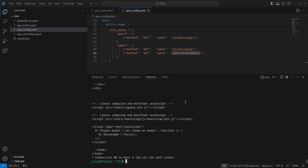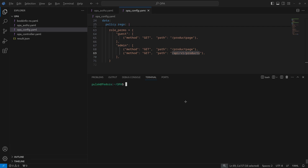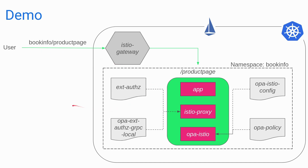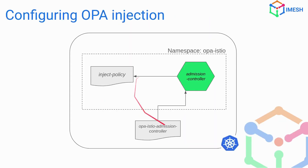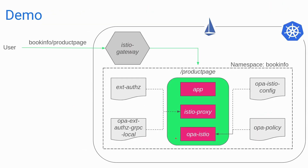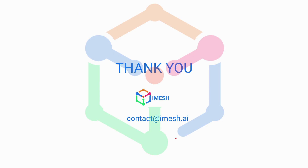That's basically it for this demo. OPA can be used in a variety of ways — in this video we also saw it used in the admission controller itself. It is also used for Terraform and many other places. If you want us to cover more about OPA and Istio integration or authorization policies, please let us know in the comments below. Thanks for watching.